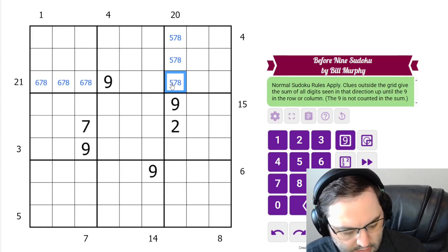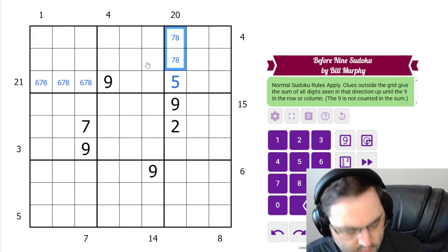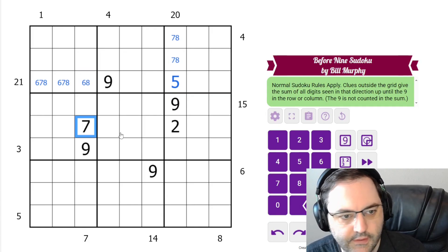And now since we have 6, 7, 8 here, this must be 5, and this is not 7 from that 7 there.